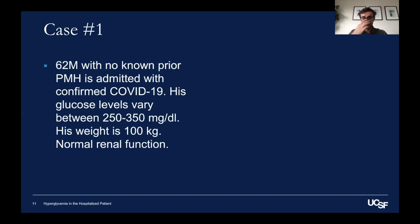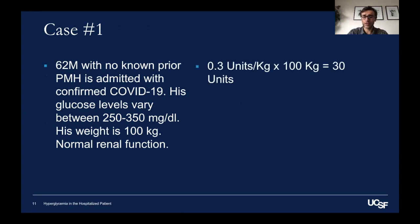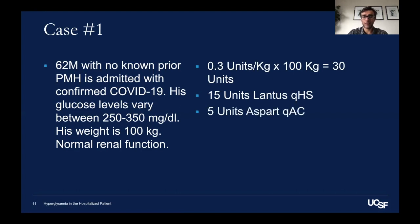Let's do a quick case to demonstrate these concepts. A 62-year-old male is admitted with COVID-19. His glucose levels on admission are between 250 and 350. He weighs 100 kilograms and has normal renal function. Using our calculation, 0.3 units per kilogram times 100 kilograms gives us 30 units. We split those 30 units between basal and prandial: 15 units of Lantus at bedtime and five units of Aspart with each meal, plus sliding scale insulin.